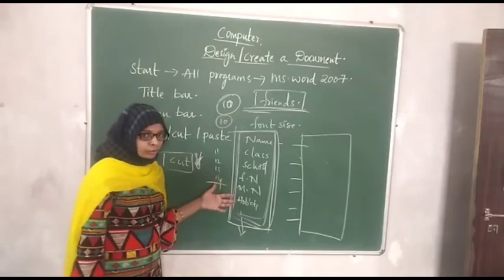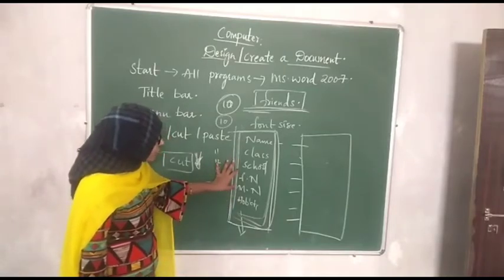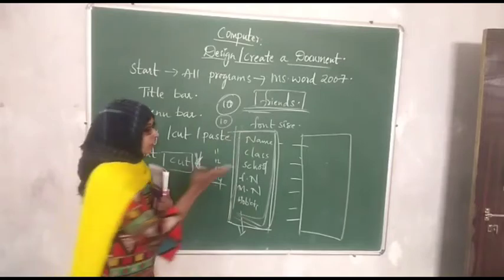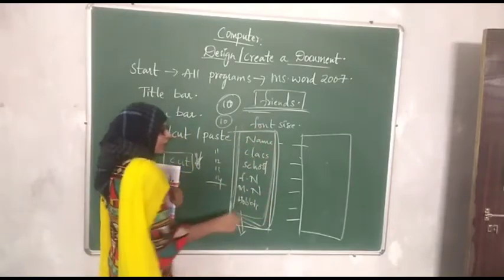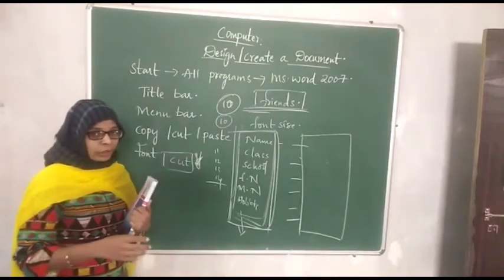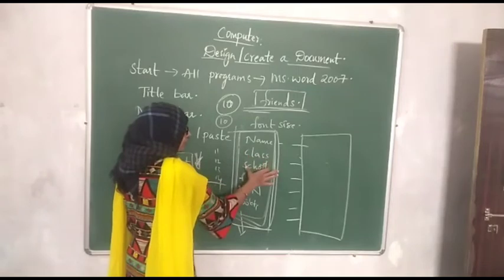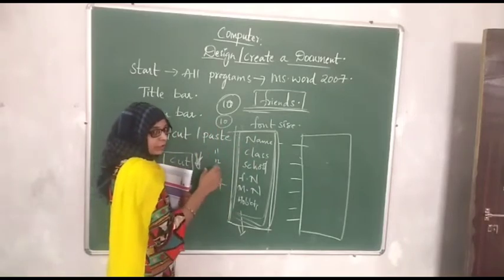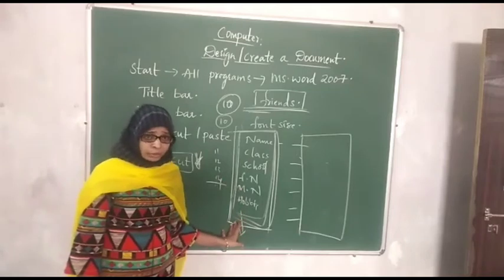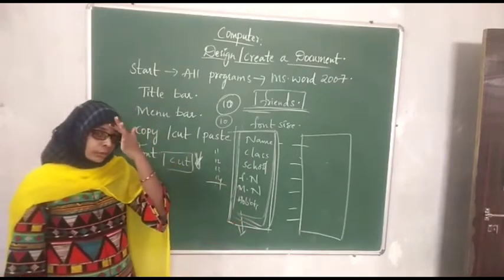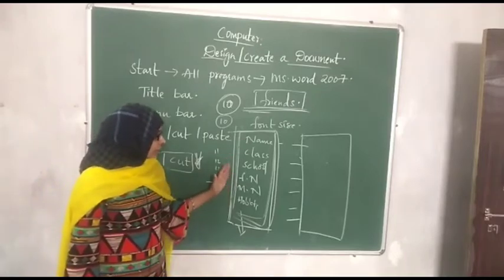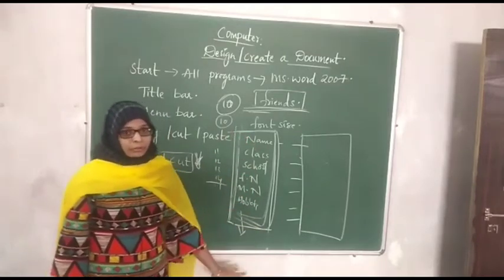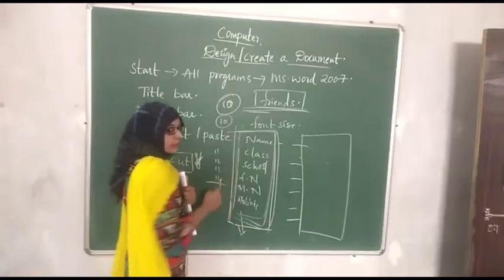Suppose you want to change the order — Father first, Mother first — or you want to replace these things so that Hobby appears first. What you want to appear first and what should come last — at that time we can use Cut. Suppose Name, Class, and School — if you want to place them below something else, simply select them and click on Cut, then paste them wherever you want.